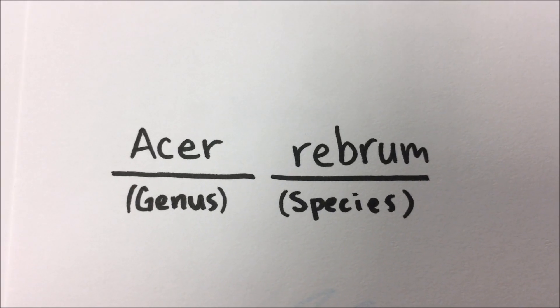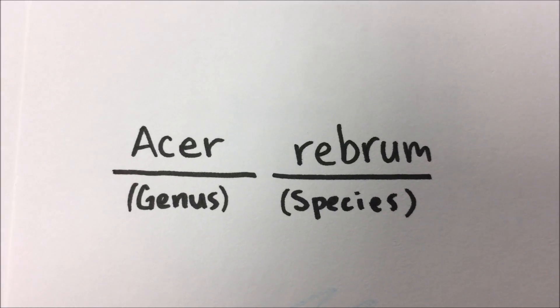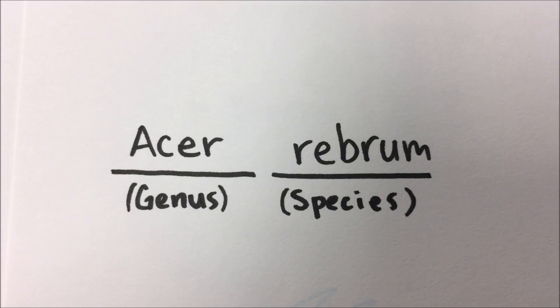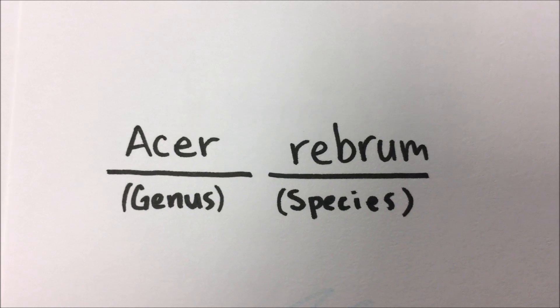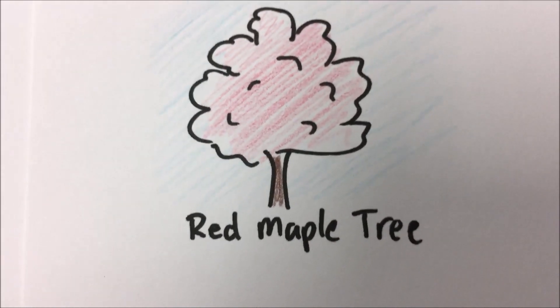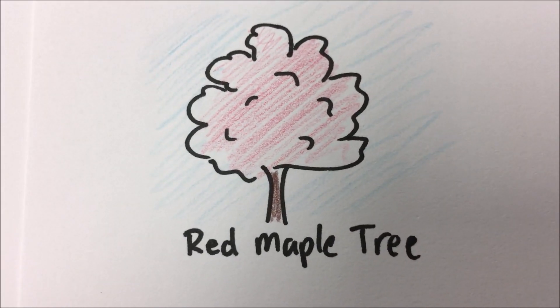Our example today is Acer rubrum, which is a scientific name — a two-part name — for what we commonly refer to as a red maple tree.